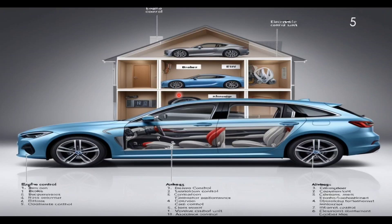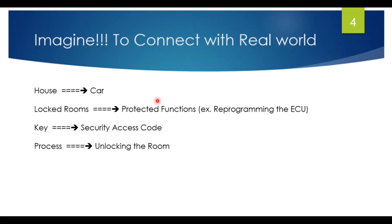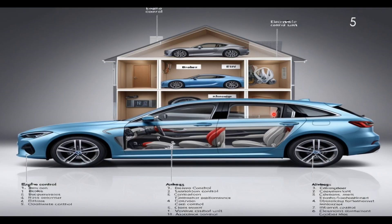The house represents the vehicle, and the various rooms represent ECUs that control different functions like engine, brakes, wiper, washer, and doors. Locked rooms represent protected functions such as reprogramming the ECU — some rooms contain valuable or sensitive items, and are locked to prevent unauthorized access. To unlock these rooms, you need a special key, which in UDS is the security access code or seed-key algorithm.